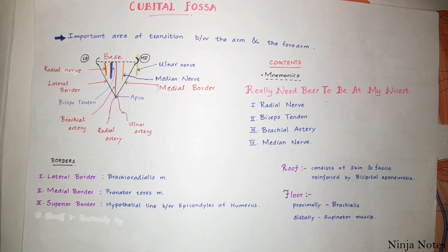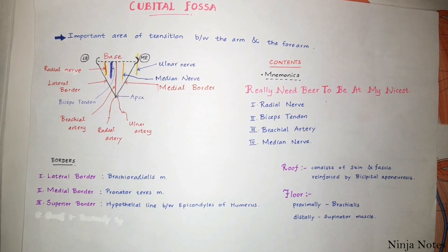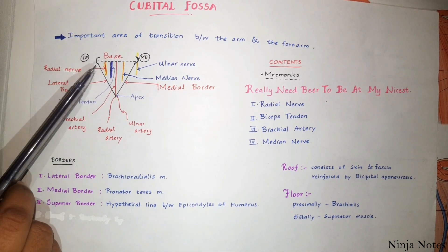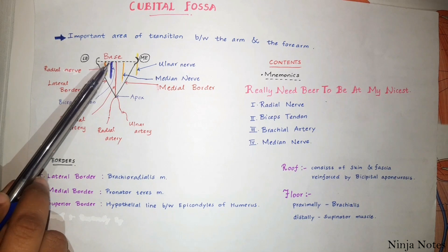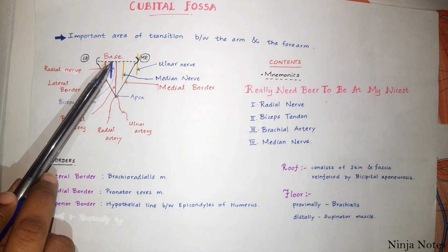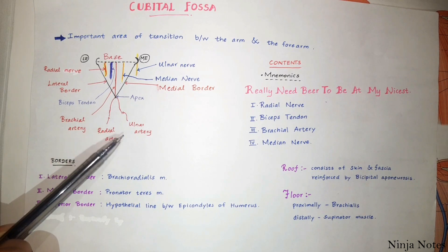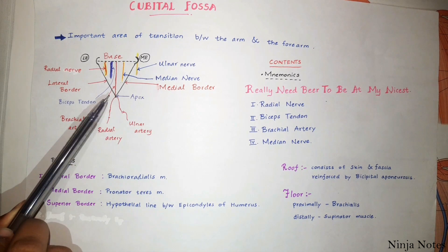Let's have a look at its contents. There is a mnemonic for that: 'Really need beer to be at my nicest.' Those are radial nerve, biceps tendon, brachial artery, and the median nerve. This is the radial nerve, this is the biceps tendon, and this is the brachial artery that is going to bifurcate into the radial artery and the ulnar artery at its apex.